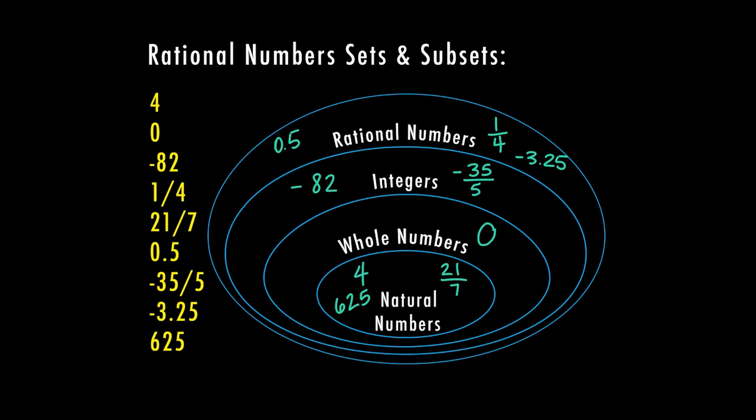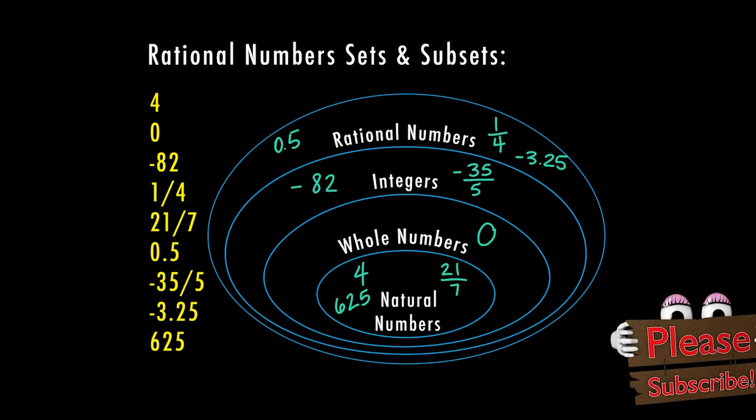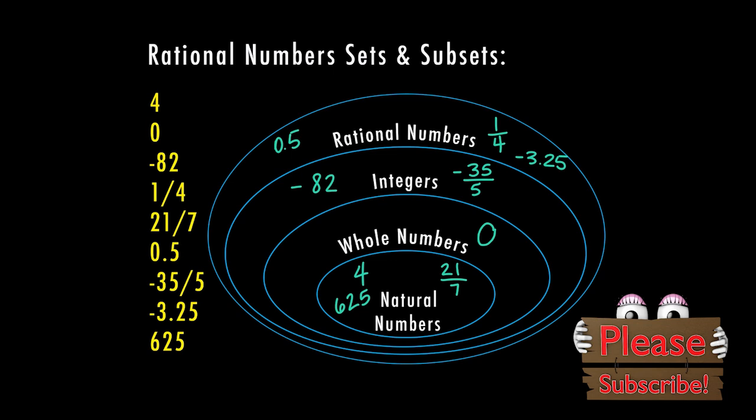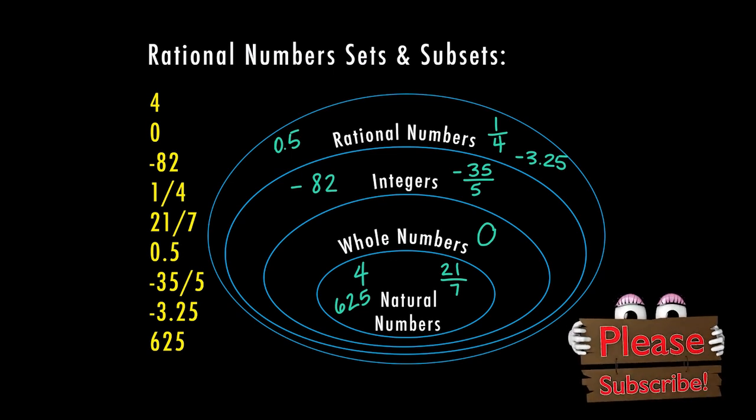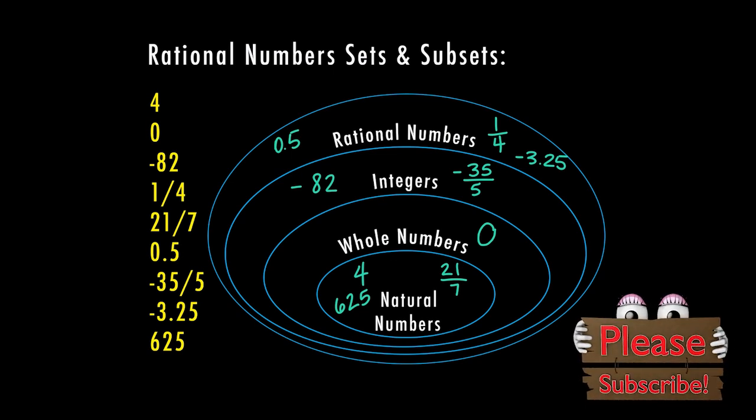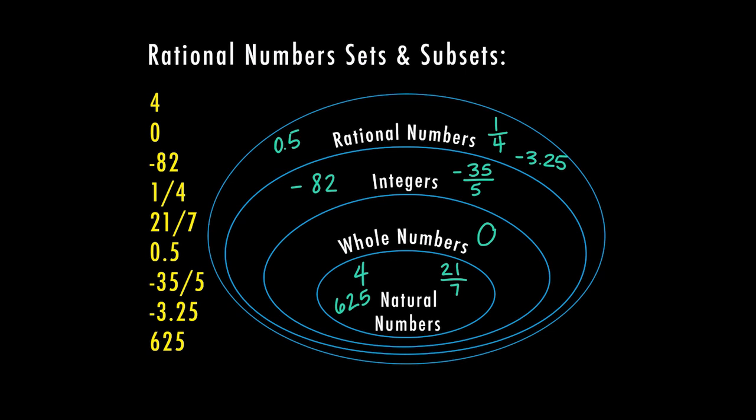So really, the sets and subsets are going to include your rational numbers, and then everything below that. So natural numbers would be incorporated in all categories, whole numbers, zero is going to be in your whole number category, and also integers and rational numbers. Your integers are your negative whole numbers. And those are also considered rational numbers. And then your rational numbers, your negative and positive fractions and decimals are only in the rational numbers category.